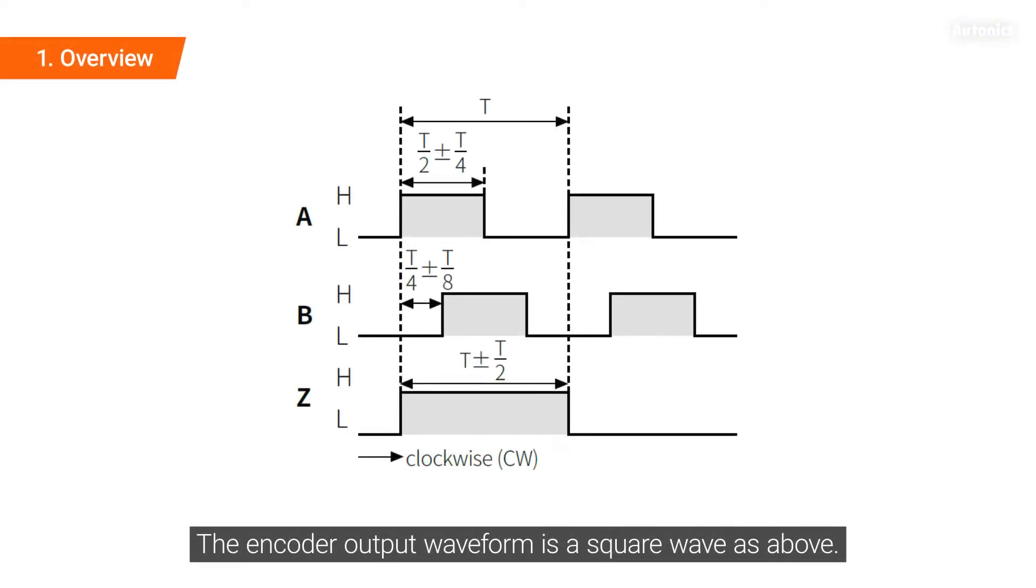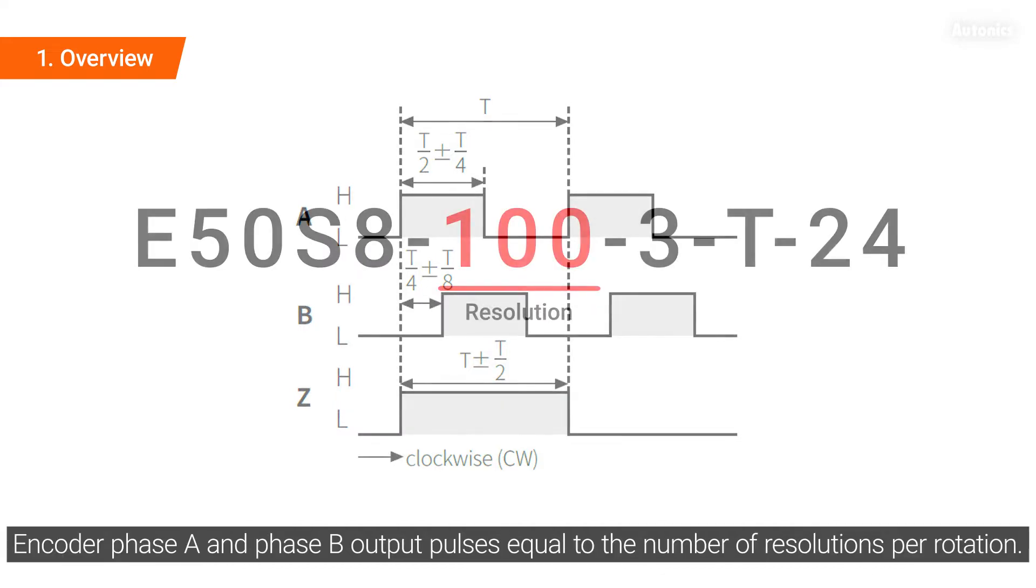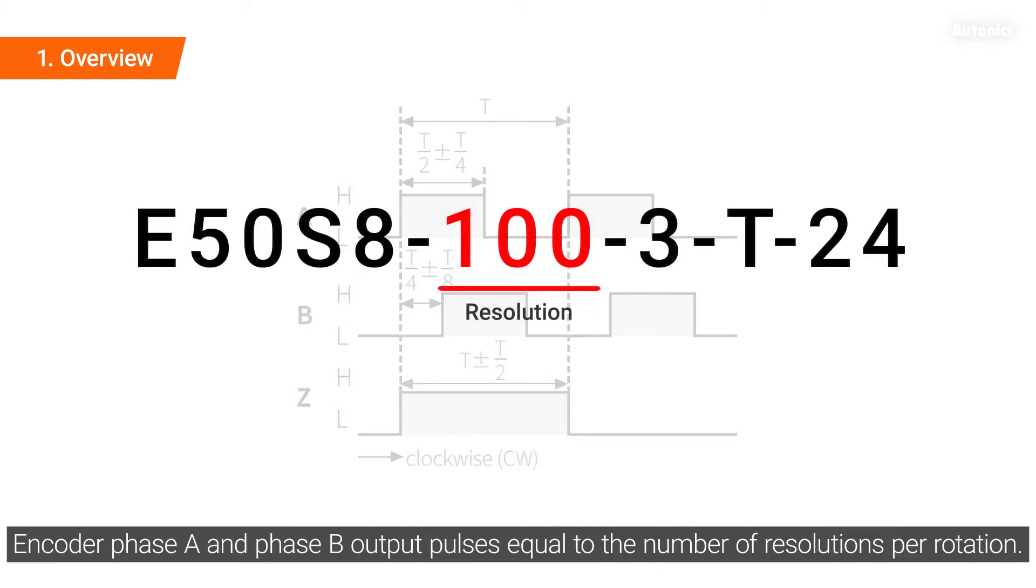The encoder output waveform is a square wave as above. Encoder phase A and phase B output pulses equal to the number of resolutions per rotation.